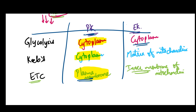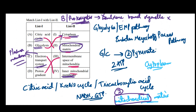In eukaryotes: glycolysis occurs in cytoplasm, Krebs cycle occurs in the matrix of mitochondria, and electron transport chain takes place in the inner membrane of mitochondria. I hope the solution for this question is clear. If you have any doubts, please feel free to comment below. If you like this content, please share it with your friends. Happy learning, bye-bye.